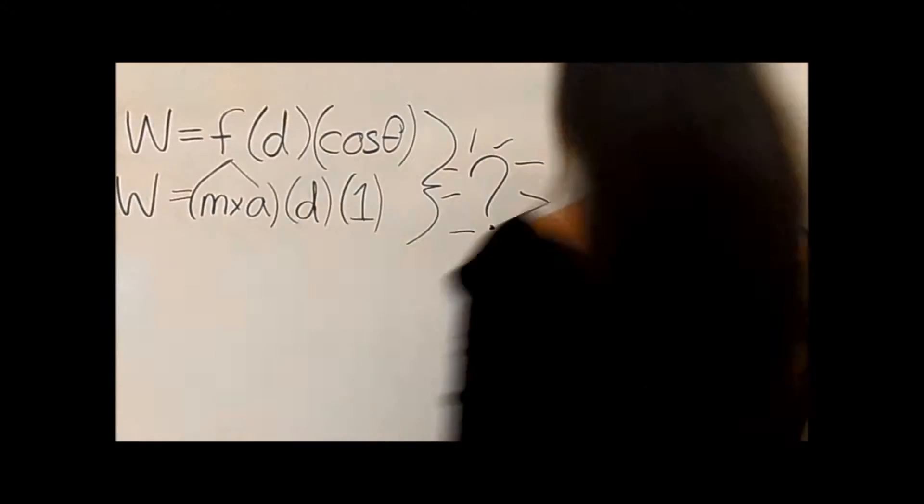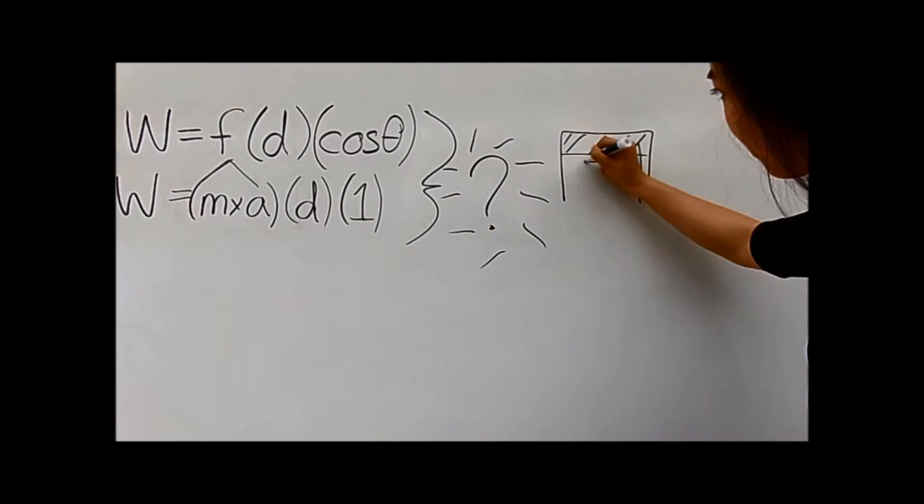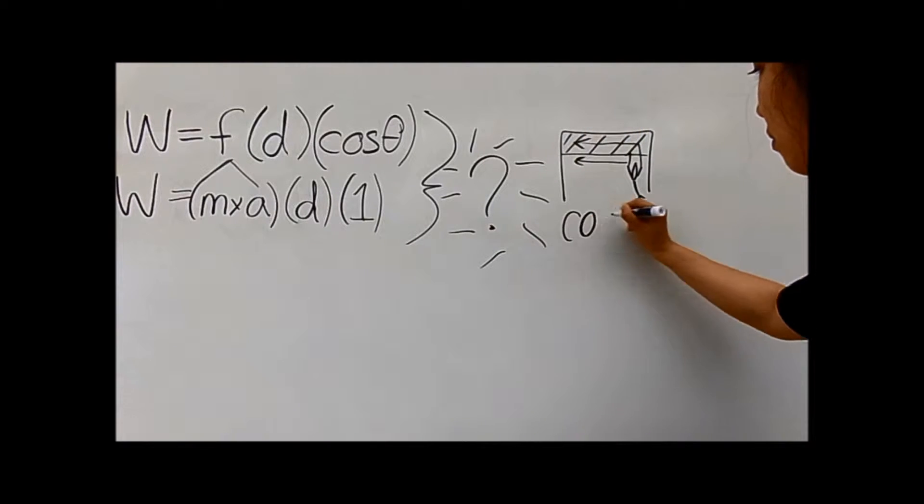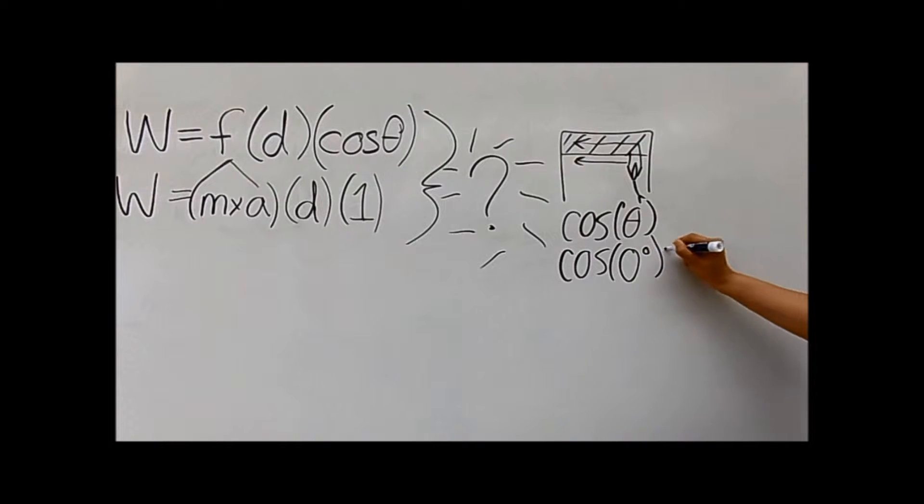One? What? Cosine theta equals one because the magnitude of work done and the direction in which Connor traveled creates an angle of zero degrees. Therefore, cos(0°) = 1.